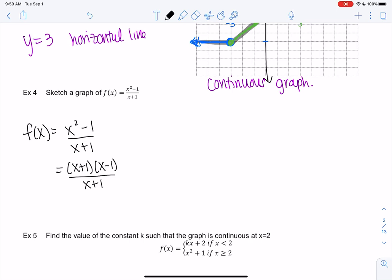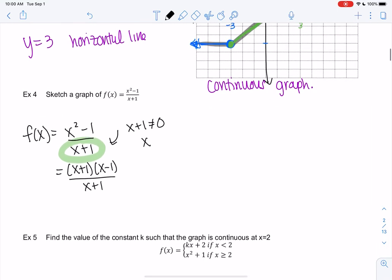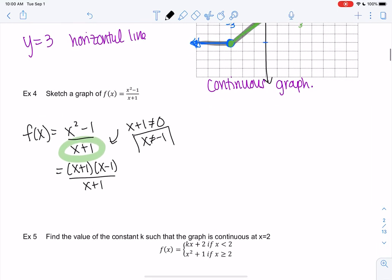Before we do any canceling, let's think about domain. What is domain here? We learned denominators can't be 0, so x plus 1 can't be 0, meaning x can't be negative 1. That's our domain. So even if things cancel out, because this is our original function, x cannot be negative 1. We need to make sure we keep track of that.